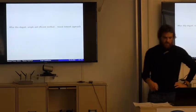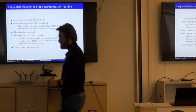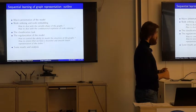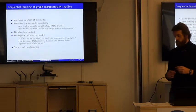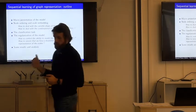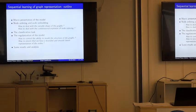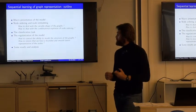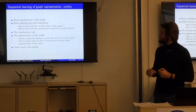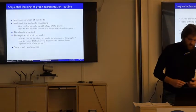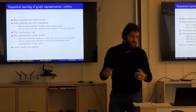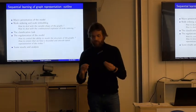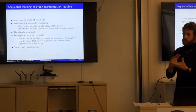After this simple and efficient method, we now present the neural network approach — the sequential approach for graph representation. There are four parts: a macro presentation of the model, the node ordering and node embedding, the classification task, and the regularization we apply to control the model's ability to understand graph structure and ensure bounded and smooth latent representations of nodes.